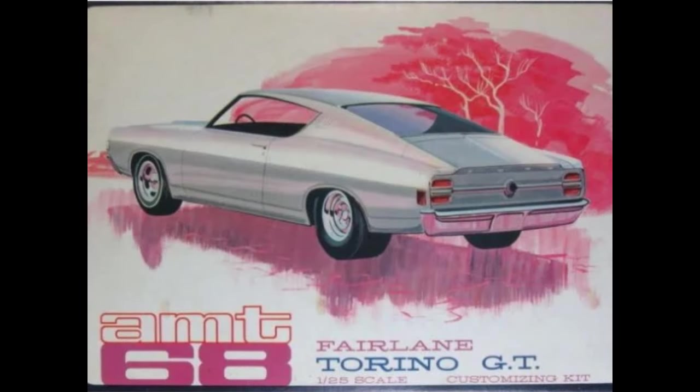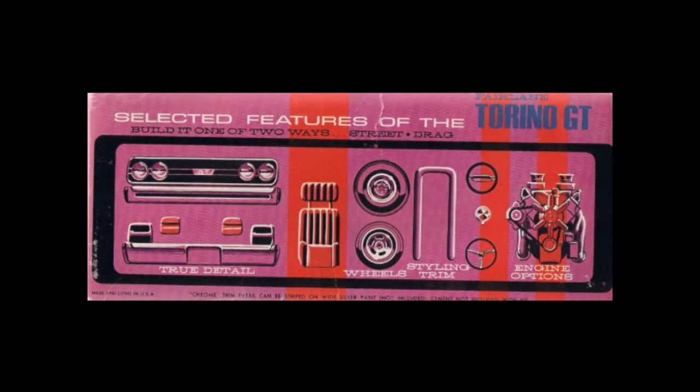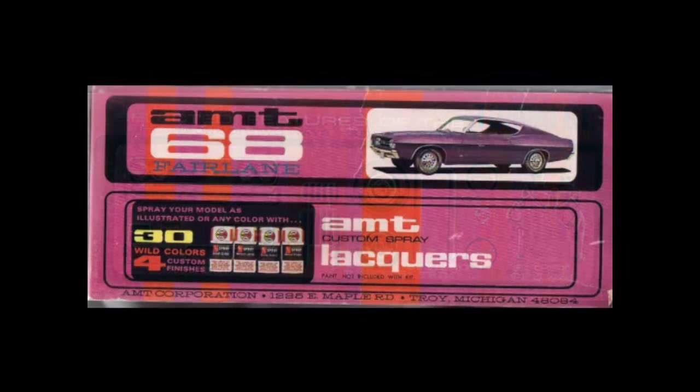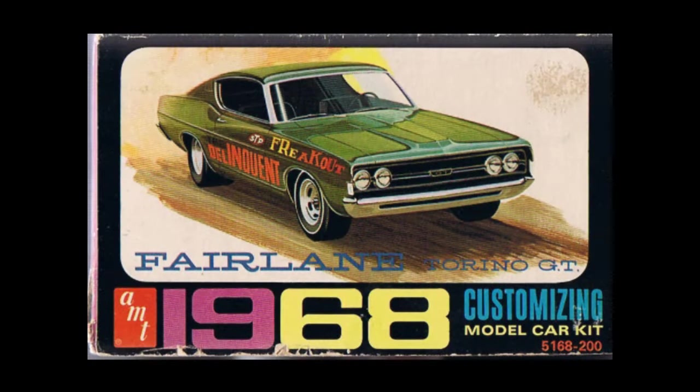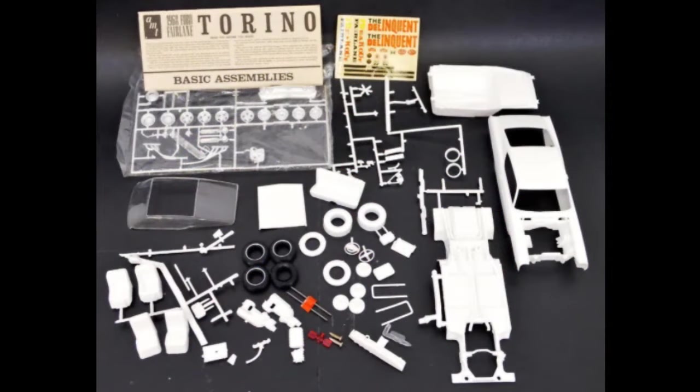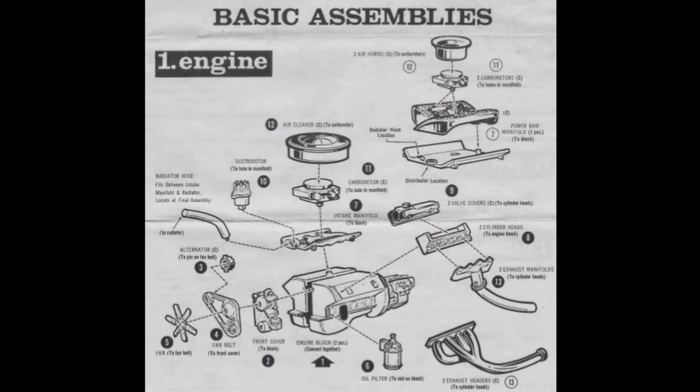AMT was the first model car manufacturer to offer a 125th scale multi-piece model kit of the 6th generation Ford Fairlane in 1968. It featured a factory stock build option and a drag racing option. The drag racing engine came with a power ram cross-manifold intake, twin 4-barrel carbs, and exhaust headers.